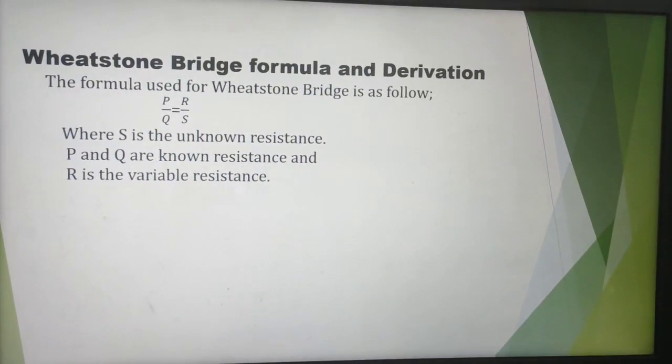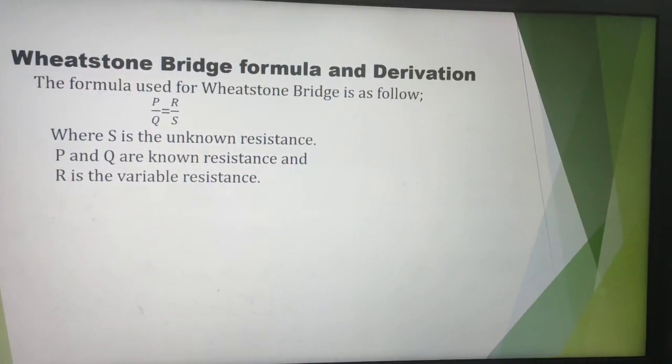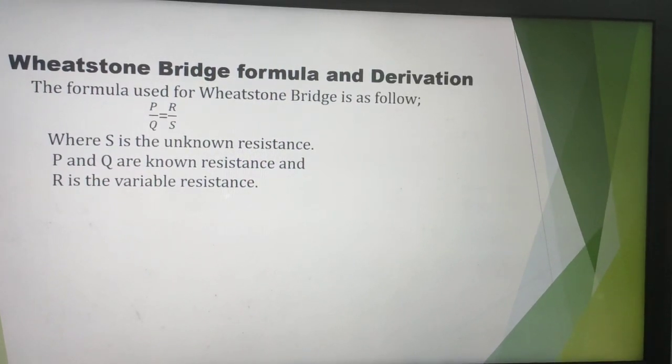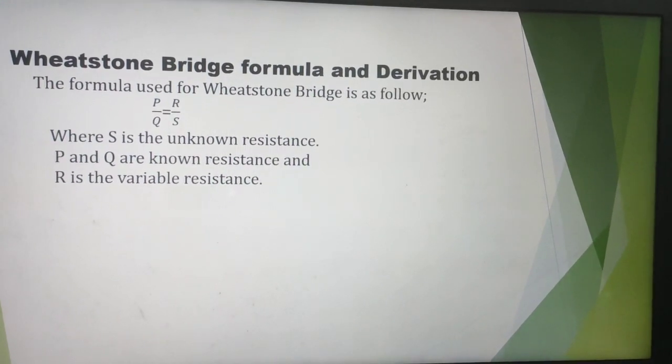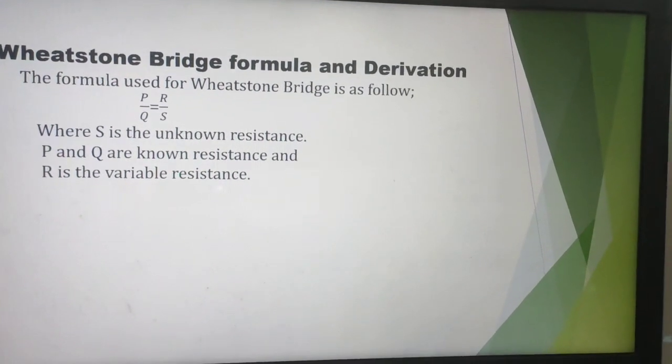The formula used for Wheatstone Bridge is P/Q = R/S. Here S is the unknown resistance, P and Q are known resistances, and R is the variable resistance. Knowing the value of the other three resistances, the value of the unknown resistance can be calculated.